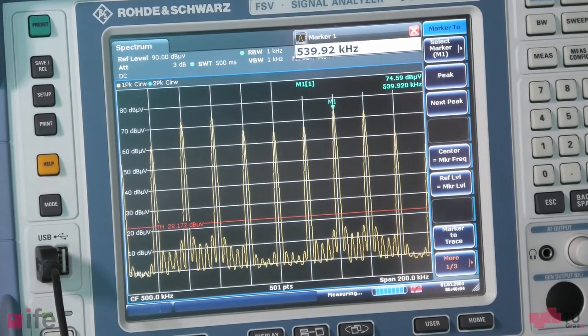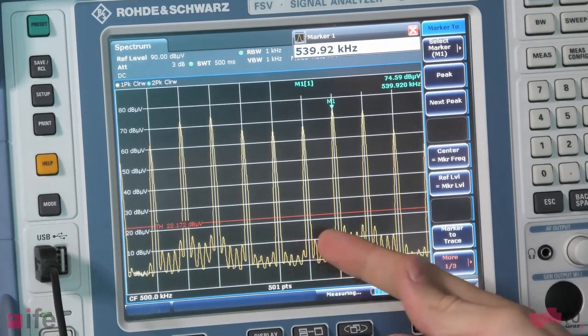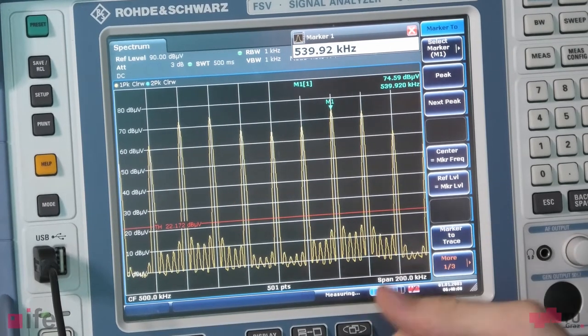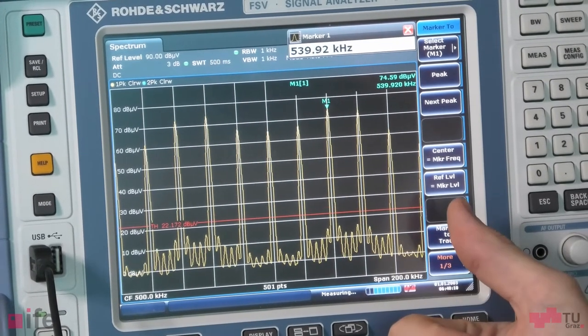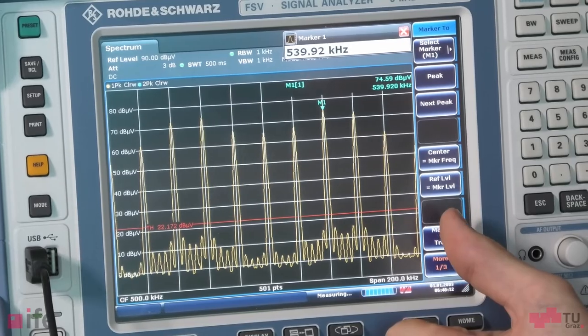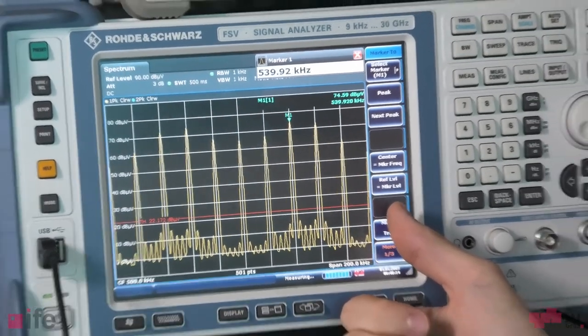That's interesting but it makes sense because those peaks only occur in whole number intervals of 20 kilohertz and 550 is not a multiple of 20 kilohertz.